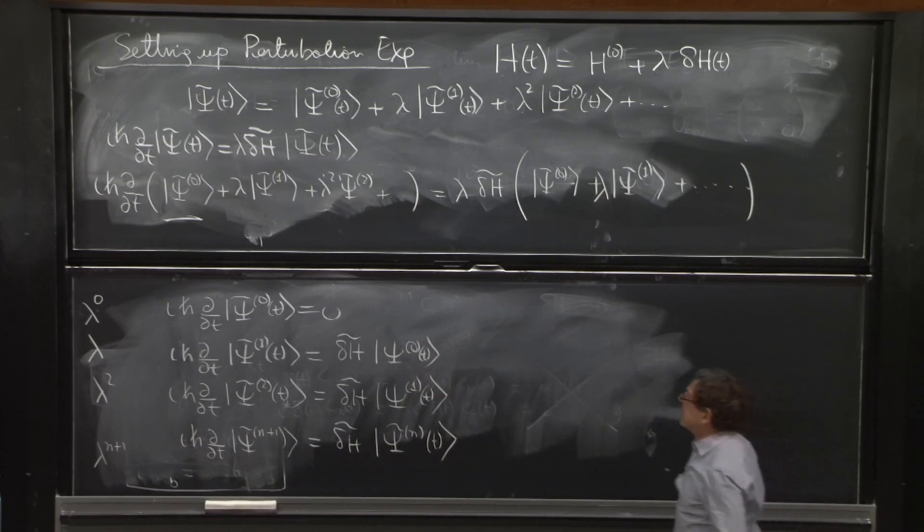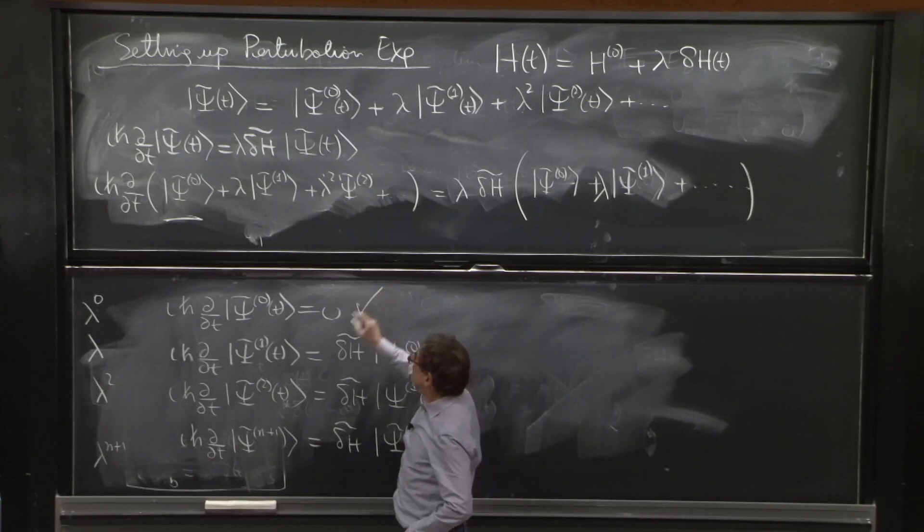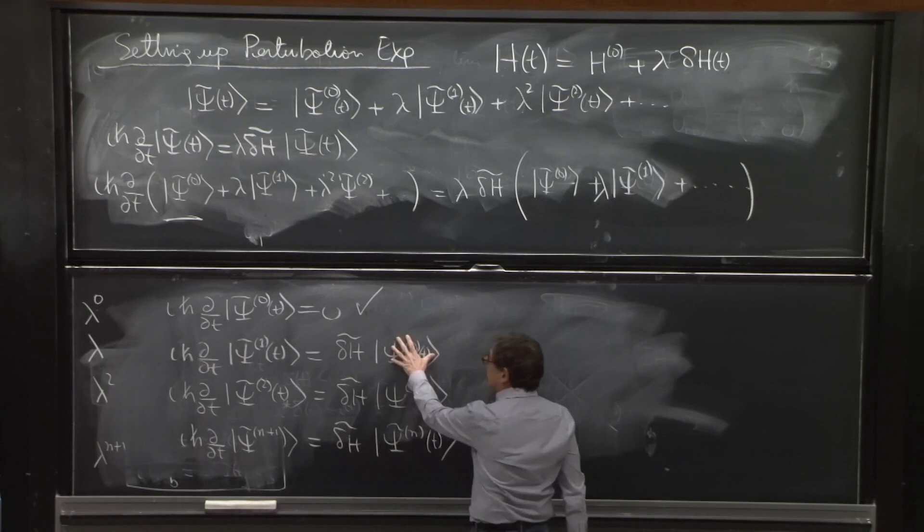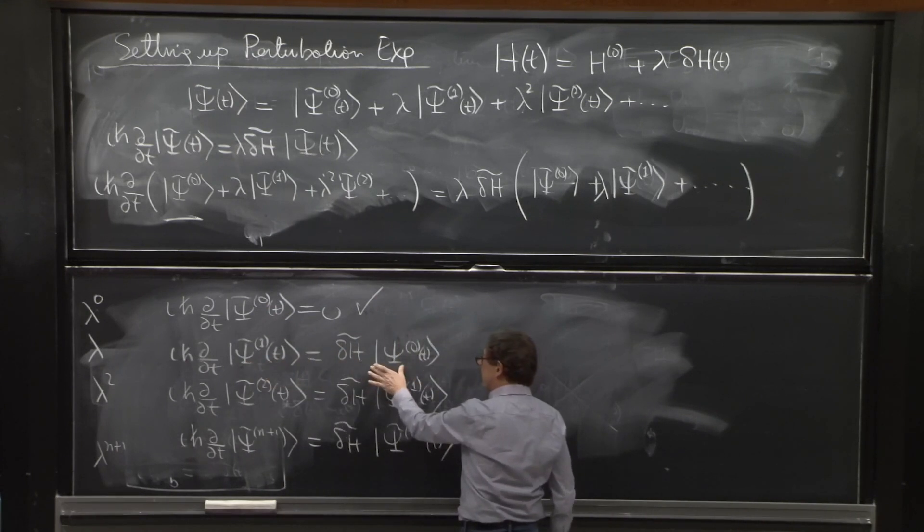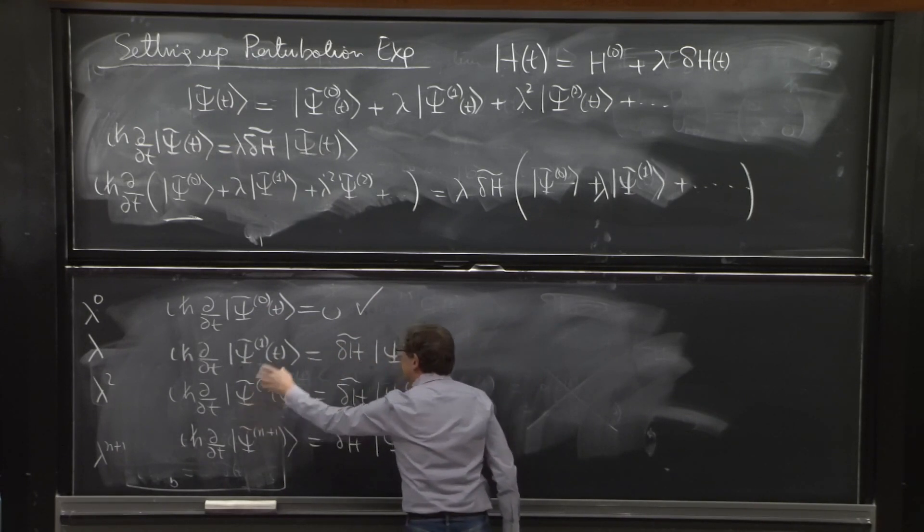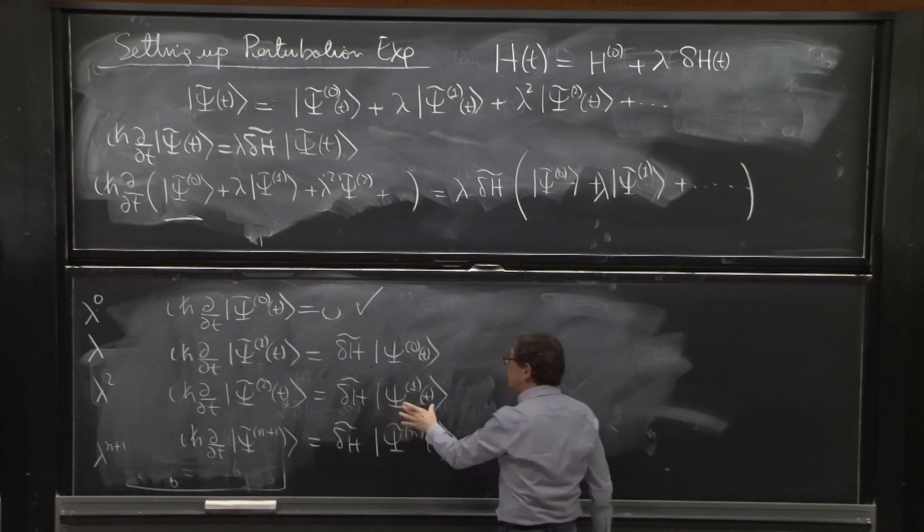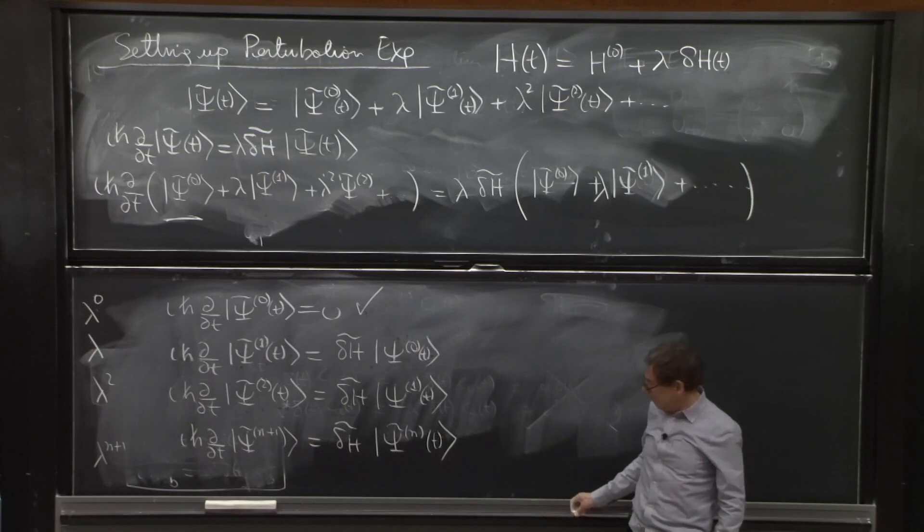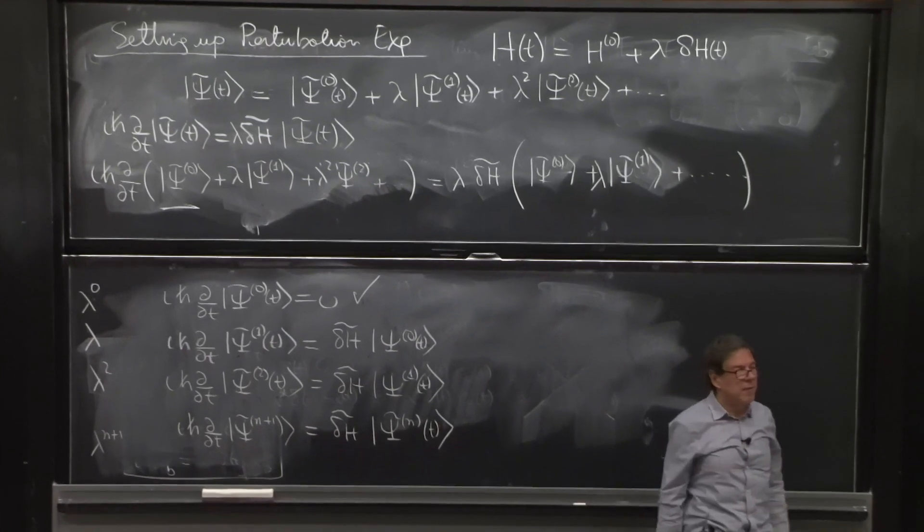So this will be simple. Once you know psi 0 of t, which is a constant, you put it here. This will be easily solved as an integral. Once you have psi 1, you put it here. You easily solve psi 2 and start solving one after another.